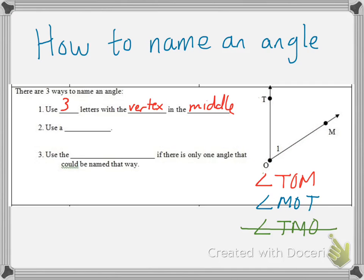Another way to name this angle is just to use a number. This is simply for convenience because it's shorter than writing out all the letters. So we could also call this angle 1. That's pretty simple.